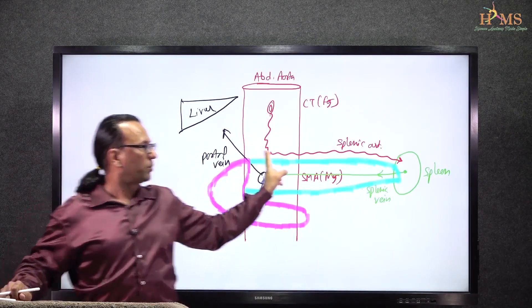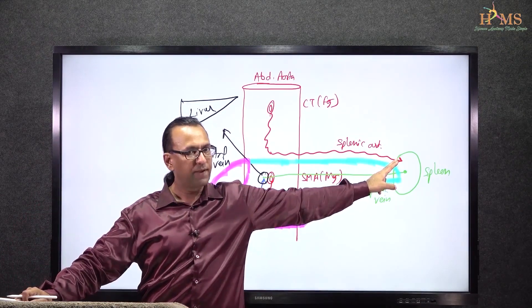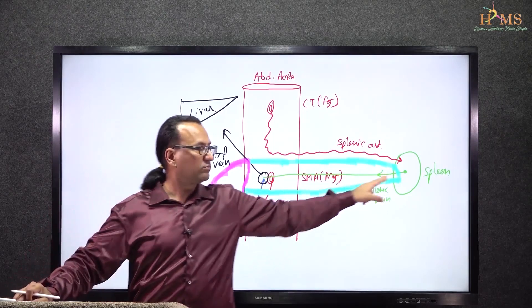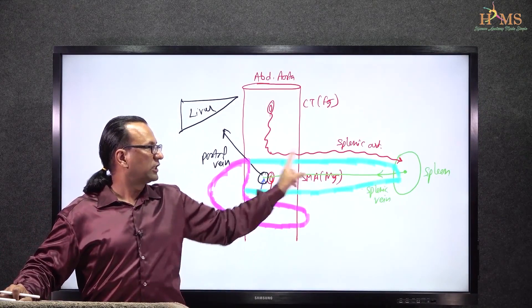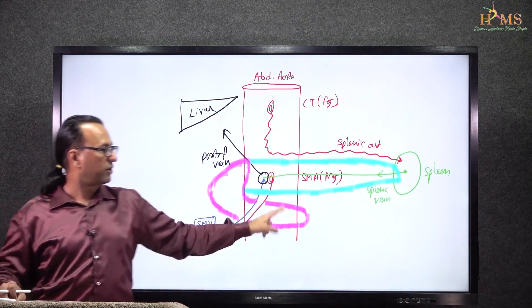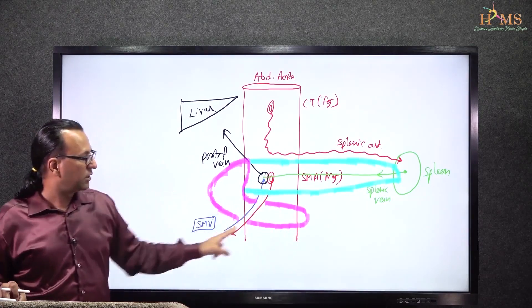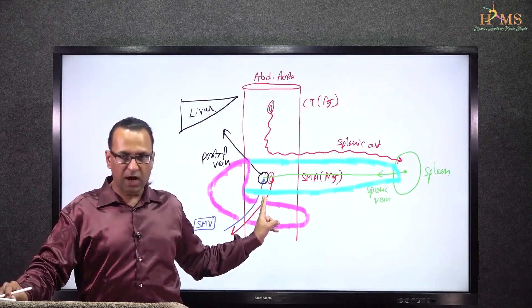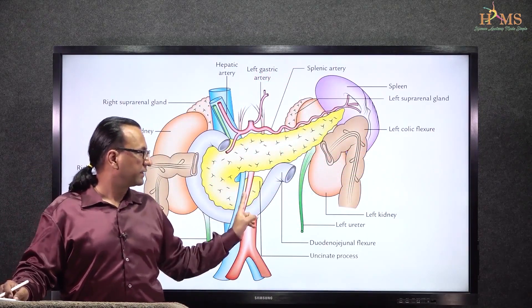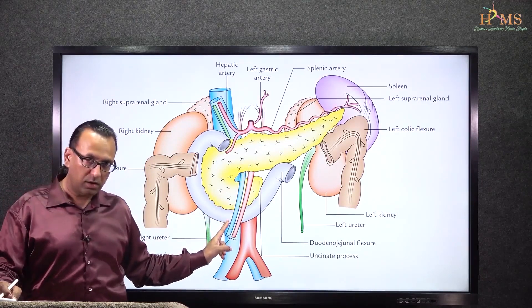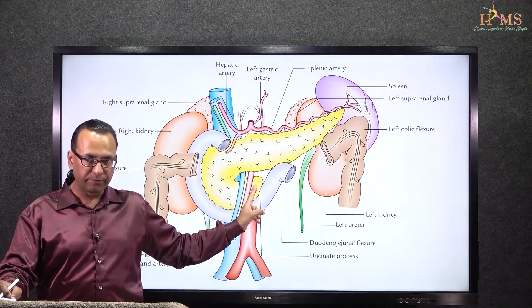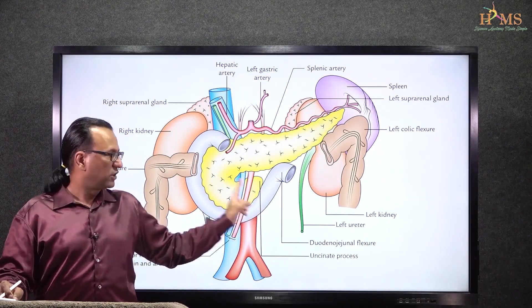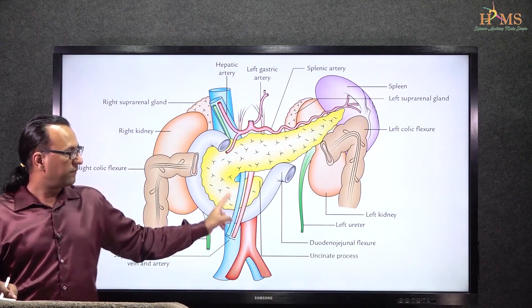The splenic vein runs behind the pancreas — behind the neck, body, and tail. So the splenic artery will not be compressed in a tumor of the uncinate process. The answer is the superior mesenteric artery or superior mesenteric vein. The diagram confirms that the superior mesenteric vein and artery pass in front of the uncinate process but behind the neck of the pancreas. A tumor of the uncinate process can compress the superior mesenteric artery and vein, which supply the midgut derivatives.